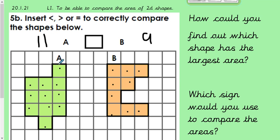So shape A has an area of 11 squares and shape B has an area of 9 squares. Therefore, A has the largest surface area. So we need to choose which sign we need to use for that now.